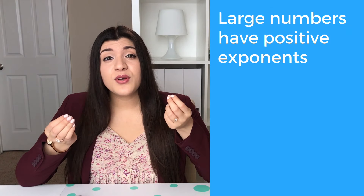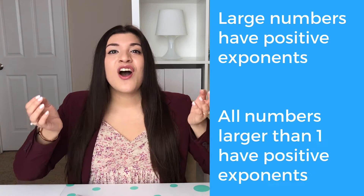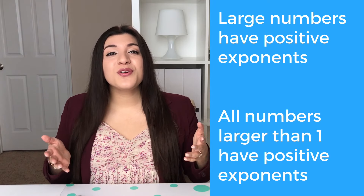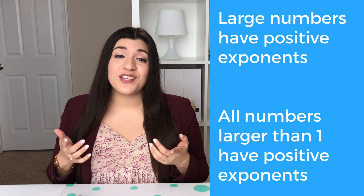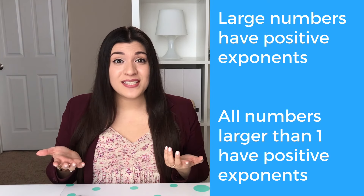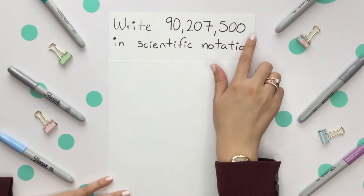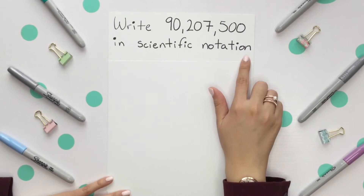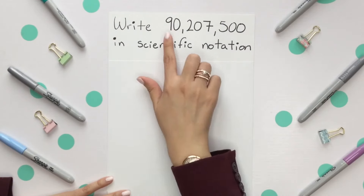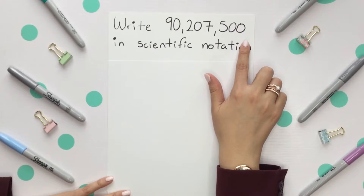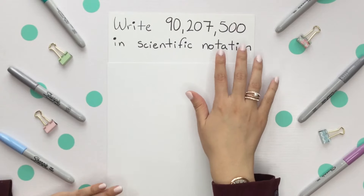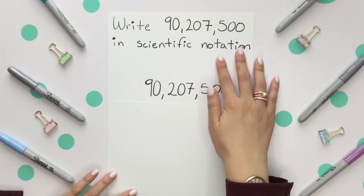When you're converting really large numbers into scientific notation, large numbers have positive exponents — all numbers larger than 1 have positive exponents. For example, let's write this ridiculously large number into scientific notation. Clearly this is larger than 1, so we know it will have a positive exponent.